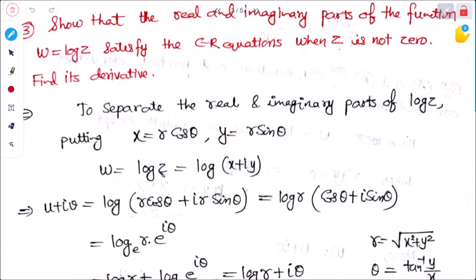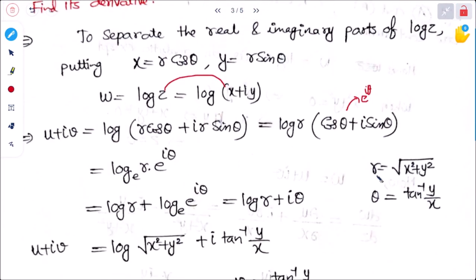So w = log z = log(x + iy). Substituting x = r cos θ, y = r sin θ: w = u + iv = log(r cos θ + i·r sin θ) = log(r·e^(iθ)). Here r = √(x² + y²) and θ = tan⁻¹(y/x).